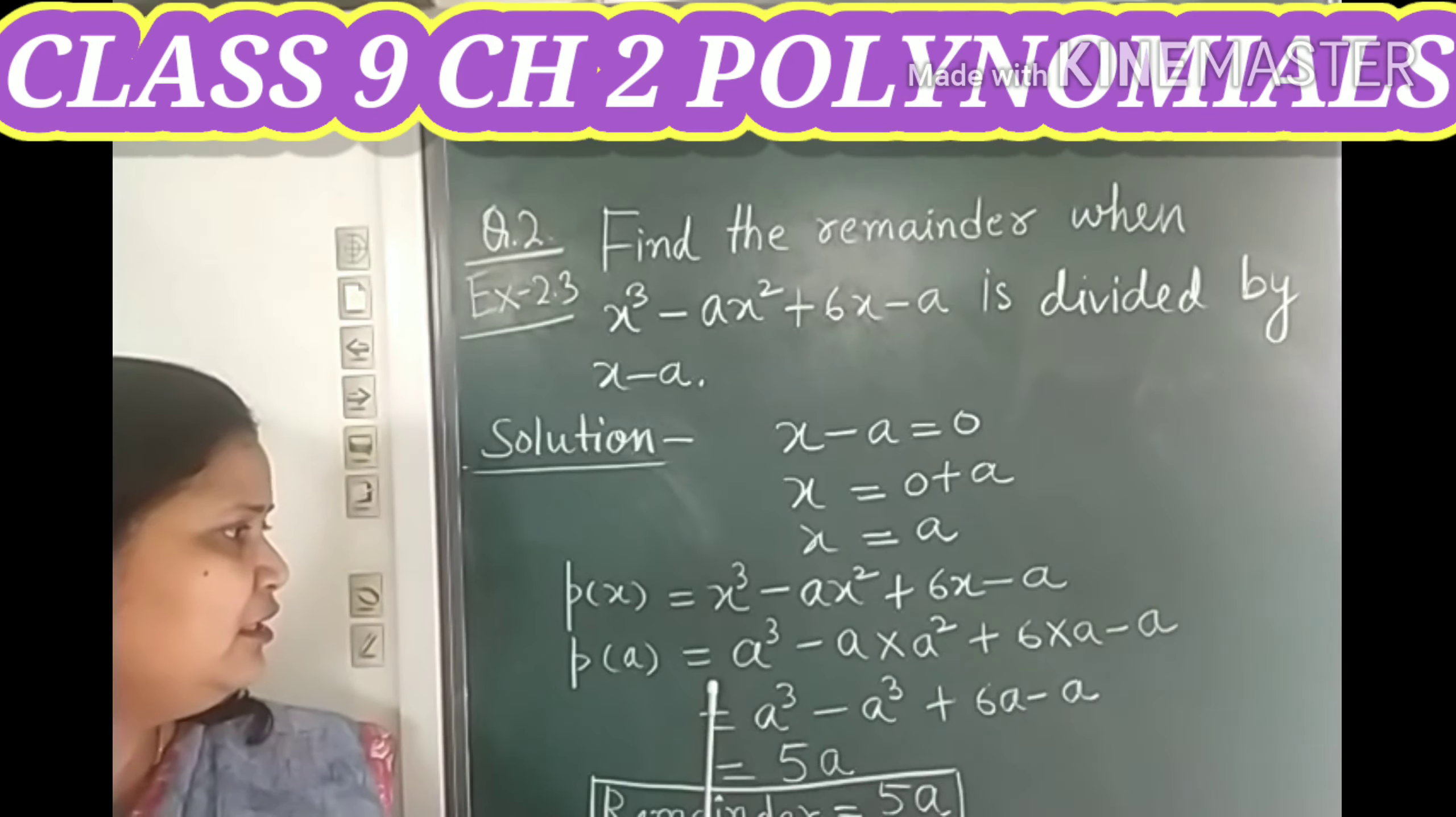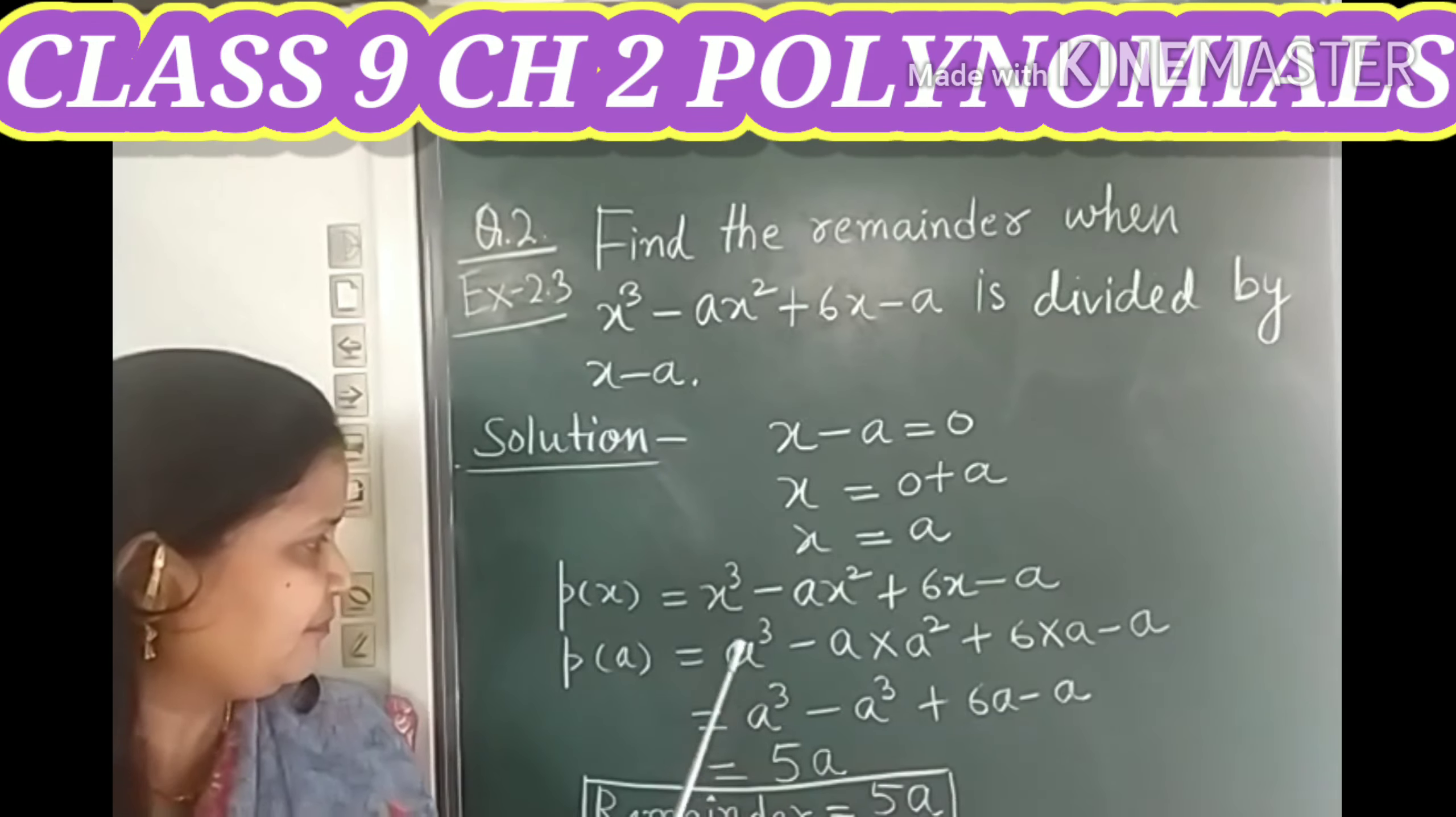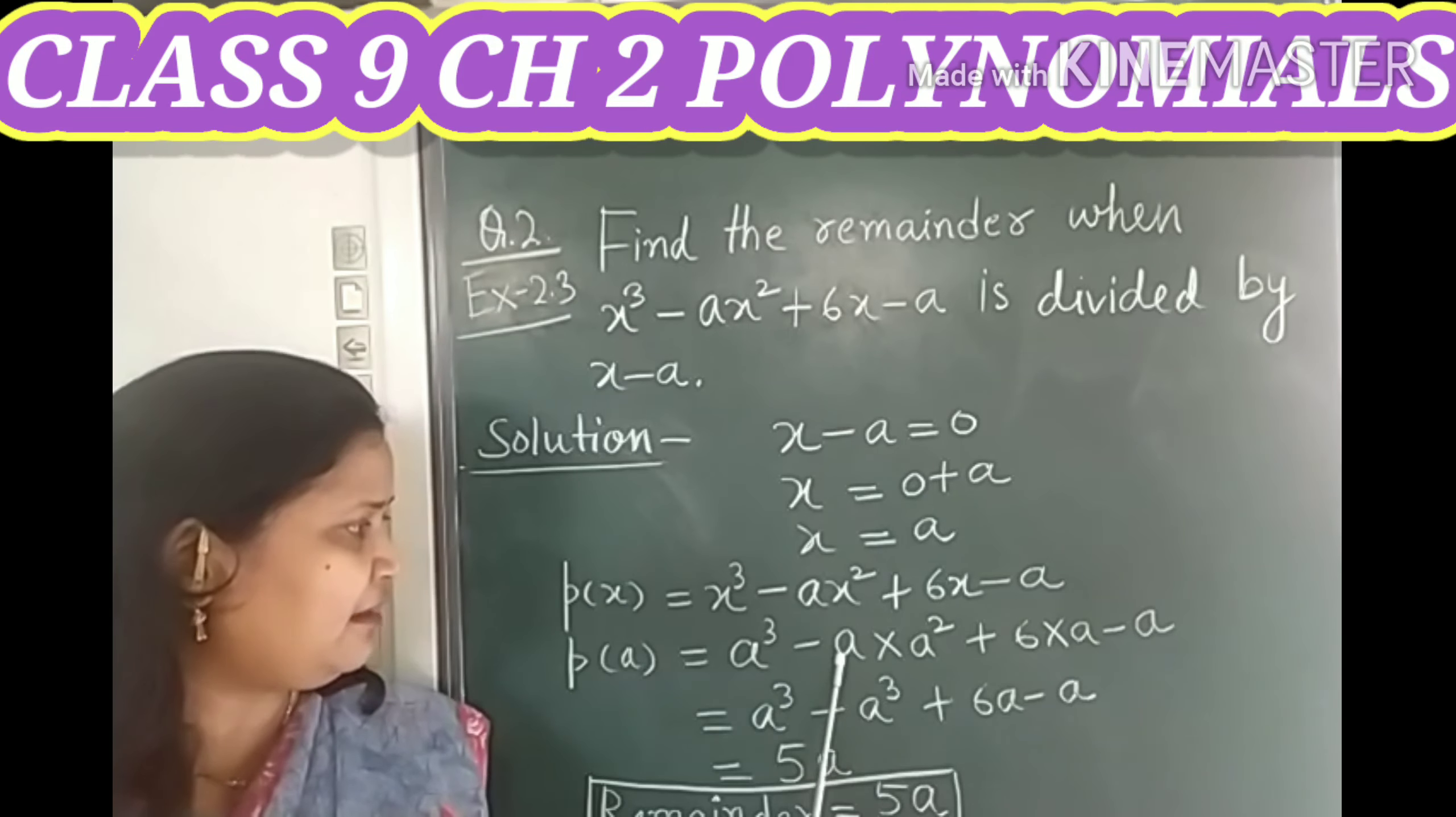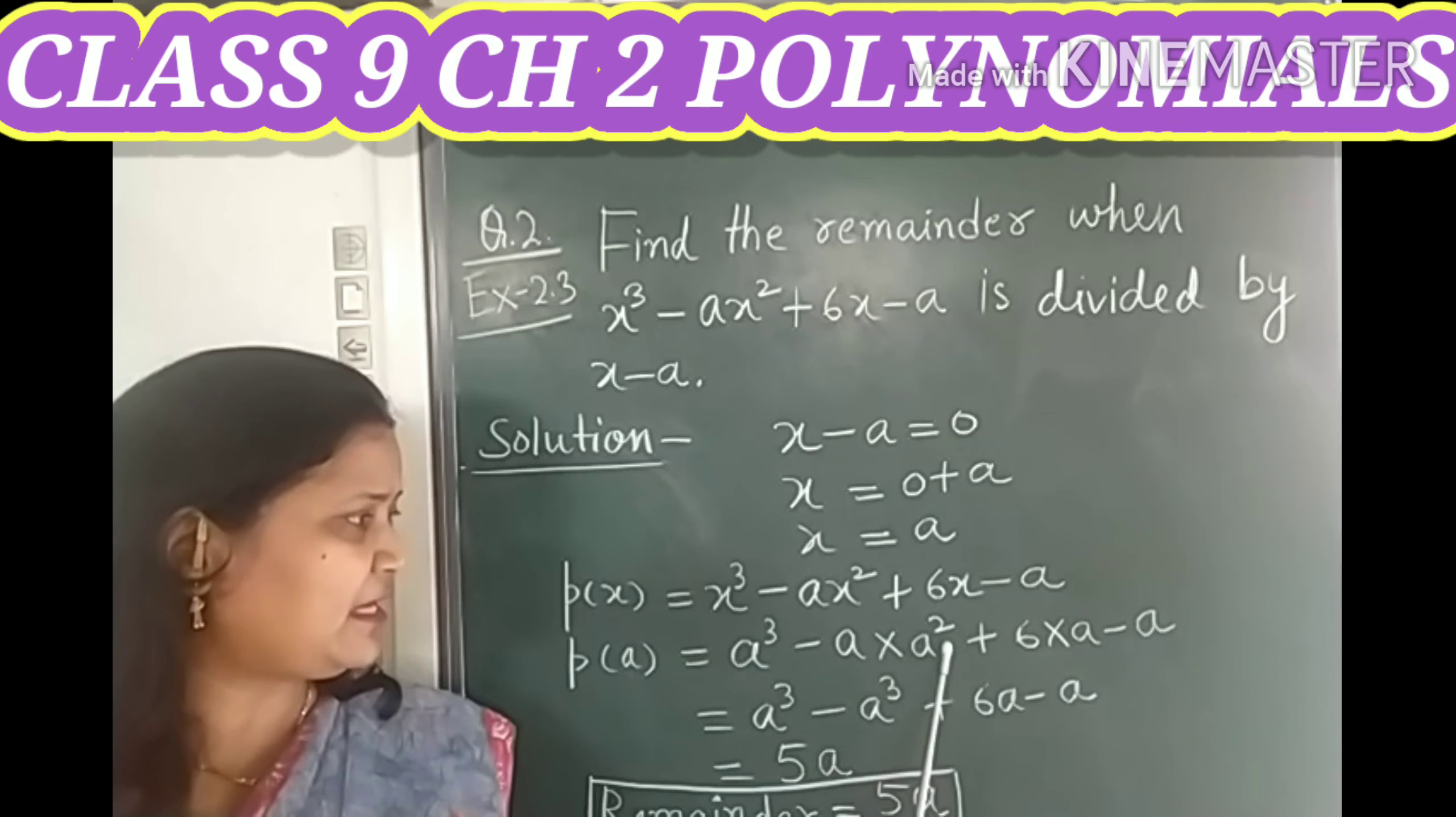Now children, to solve it further, this a³ we can write it as it is and this minus a when multiplied by a², it becomes minus a³